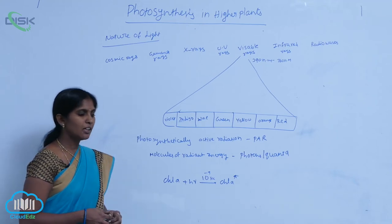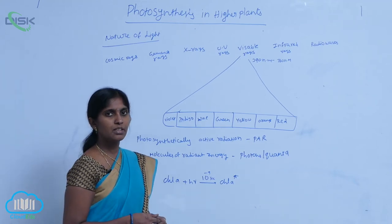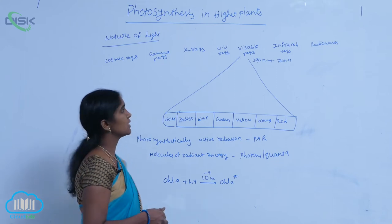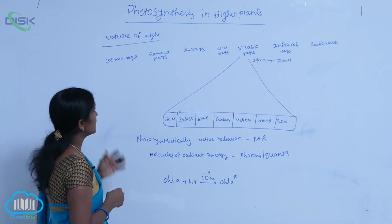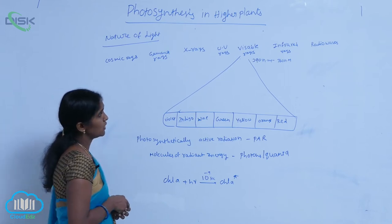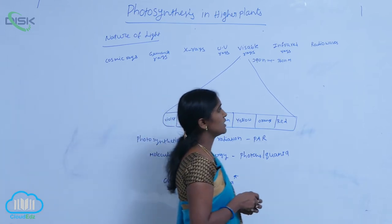Sunlight has different wavelengths of light, different wavelengths of rays. Here we are seeing different wavelengths of rays: cosmic rays, gamma rays, x-rays, UV rays, visible rays, infrared rays, and radio waves.